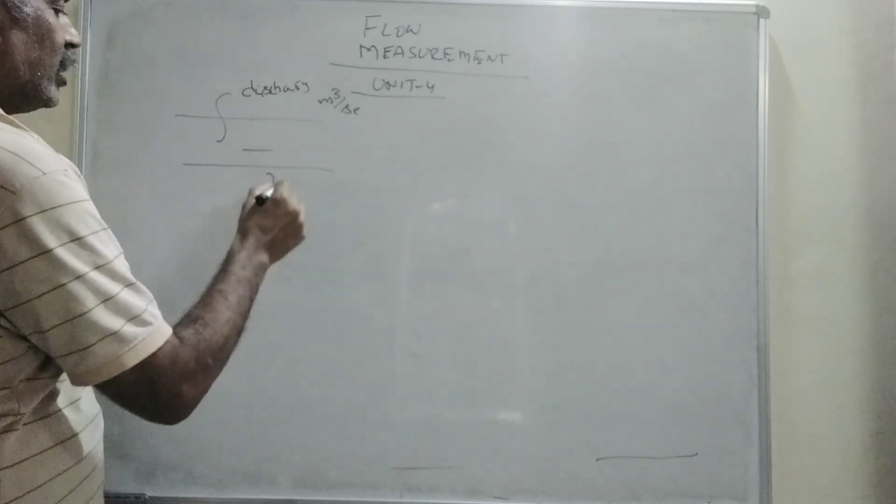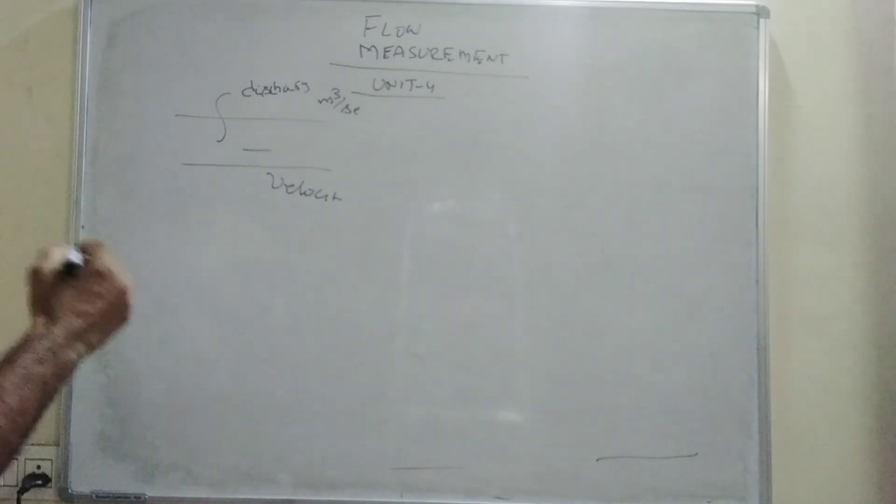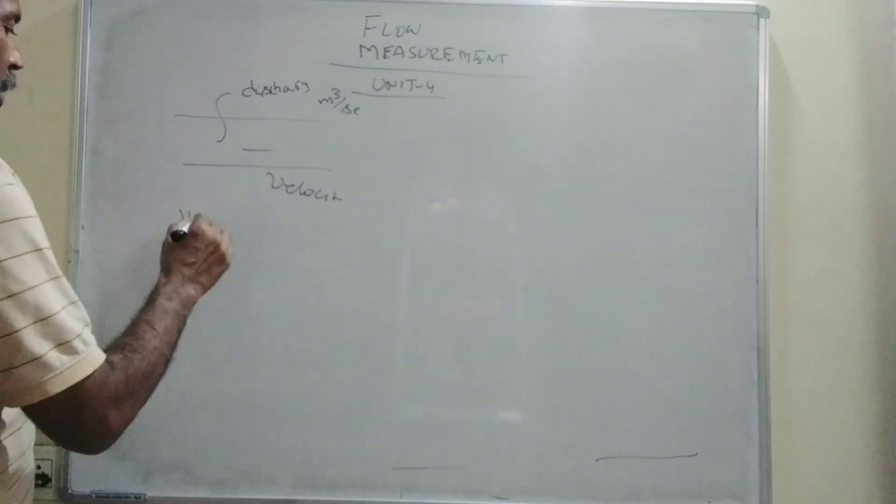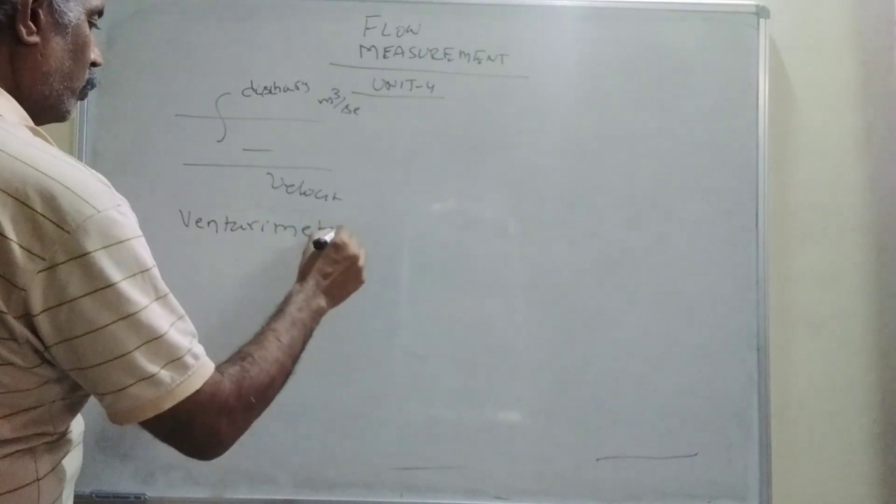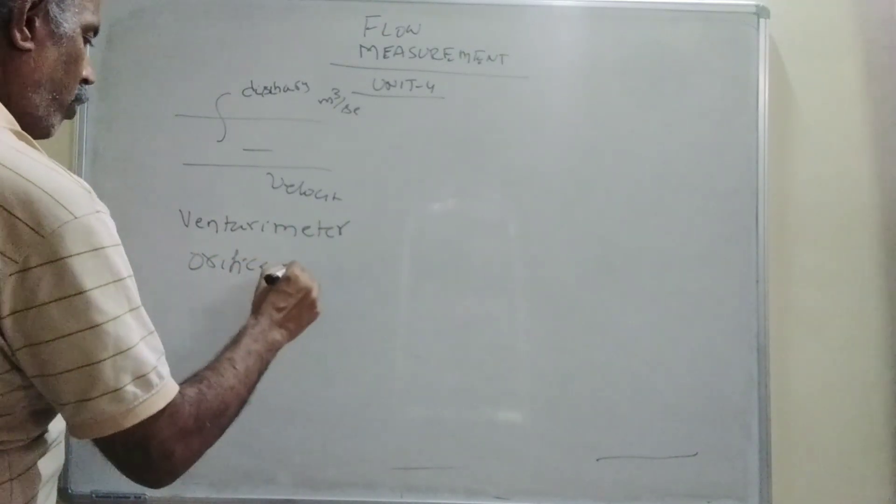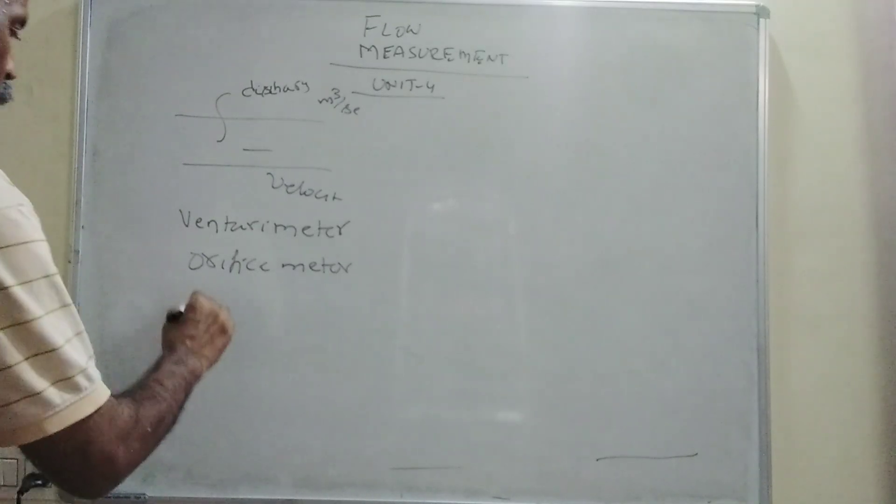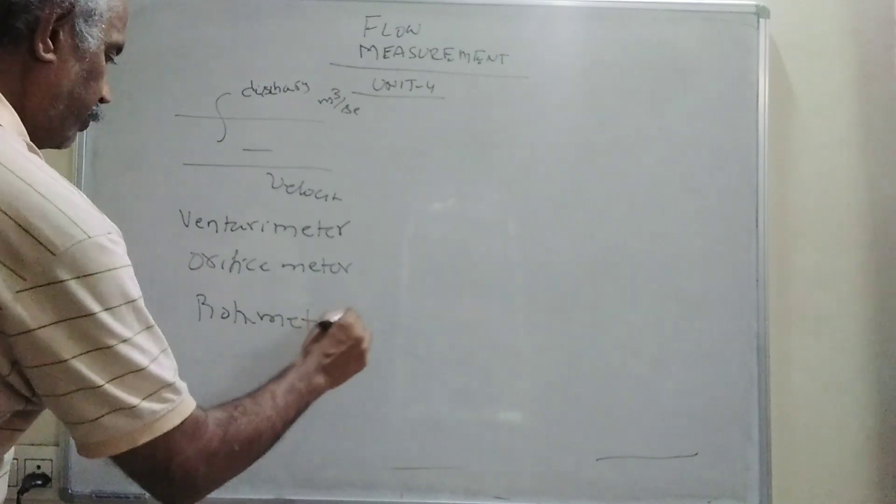And how much velocity it is going, velocity it is moving. The different types of instruments that are used to measure the flow elements are venturi meter, and orifice meter, and then rotometer.